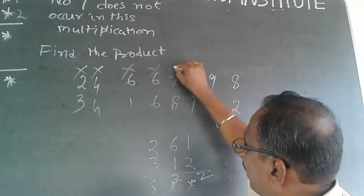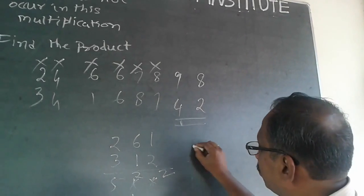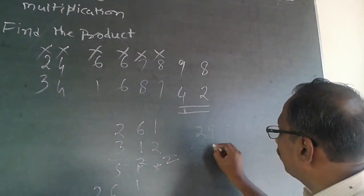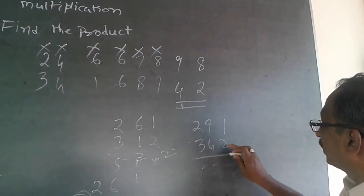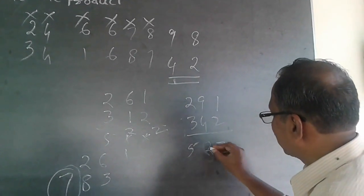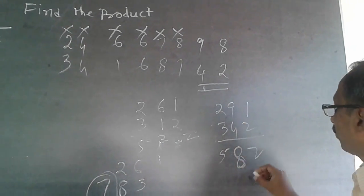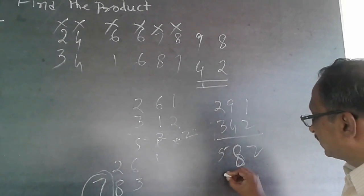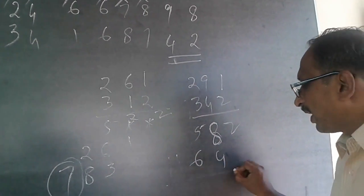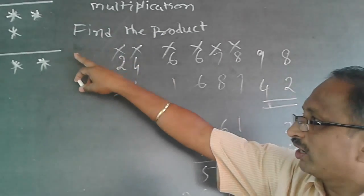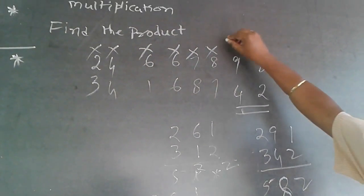Supposing I use 9 and 4: 291 × 342. What happens is 4×1=4, 4×9=36 (carry 3), 4×2=8+3=11 — I am getting a 4-digit number in the partial product, whereas I need only a 3-digit number. So nine is also ruled out.